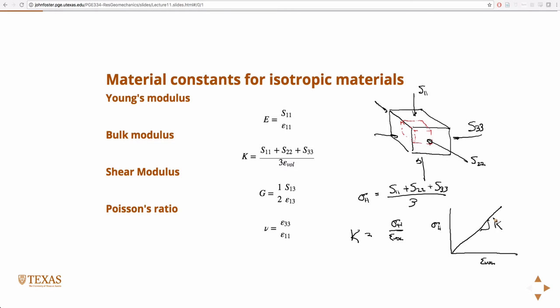So in words, the Young's modulus is the material's resistance to uniaxial deformation. That's the Young's modulus or elastic modulus. The bulk modulus is the material's resistance to hydrostatic compression, squeezing on all sides of the block. It's a measure of the material's strength under that load.